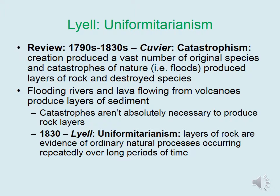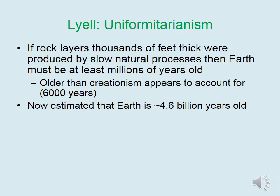Uniformitarianism states that layers of rock are evidence of ordinary natural processes occurring repeatedly over long periods of time. If rock layers thousands of feet thick were produced by slow natural processes, then Earth must be at least millions of years old — older than creationism appears to account for, which states the Earth is around 6,000 years old. It's now estimated that the Earth is around 4.6 billion years old. Geologists know how long it takes for each rock layer to be laid down, so they can estimate the Earth's age by counting rock layers, similar to counting rings in a tree trunk.